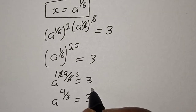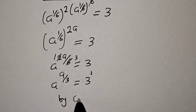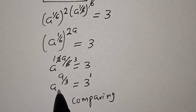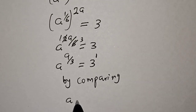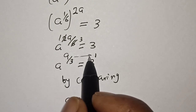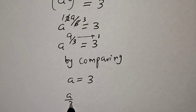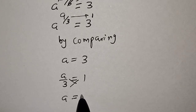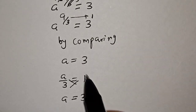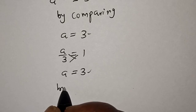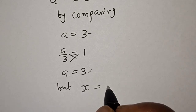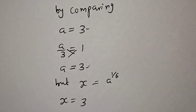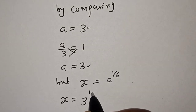And this 3 is the same thing as 3 raised to power 1. By comparing, the base gives us a is equal to 3, and from the exponent, a over 3 is equal to 1. Cross multiplying gives a is equal to 3. Therefore, from both the exponent and the base, a is equal to 3. But since s is equal to a raised to power 1 over 6 and a is equal to 3, therefore s is equal to 3 raised to power 1 over 6.